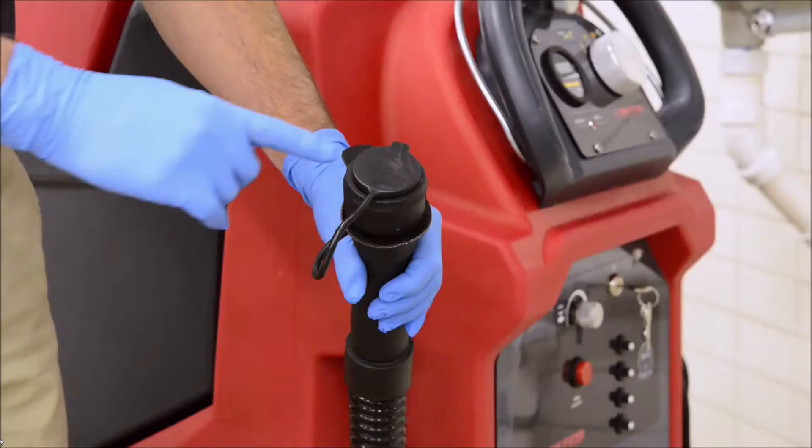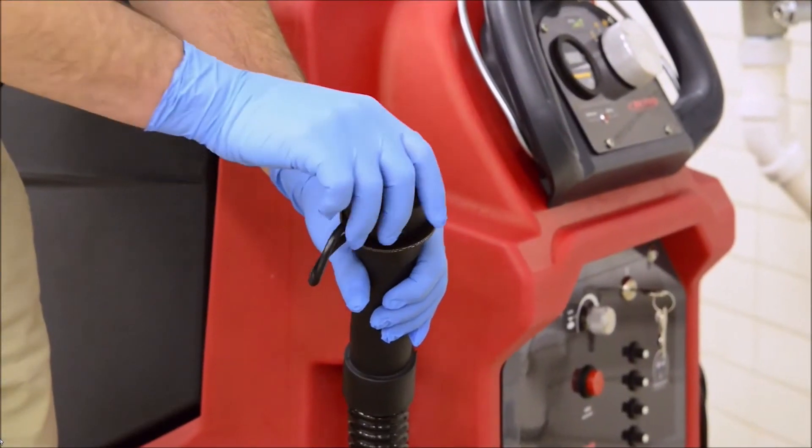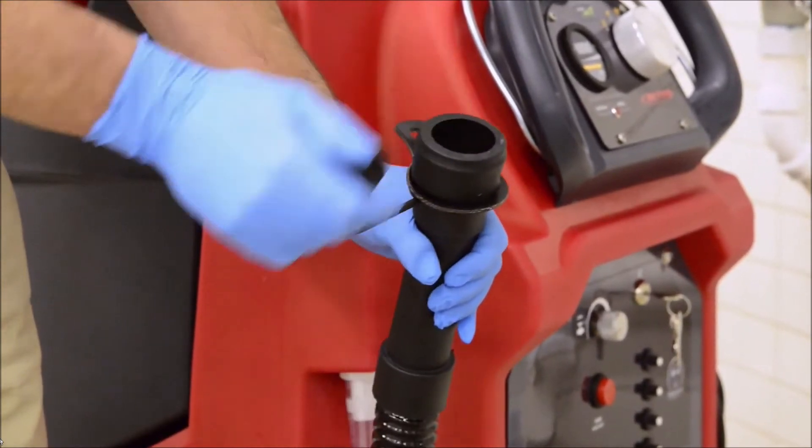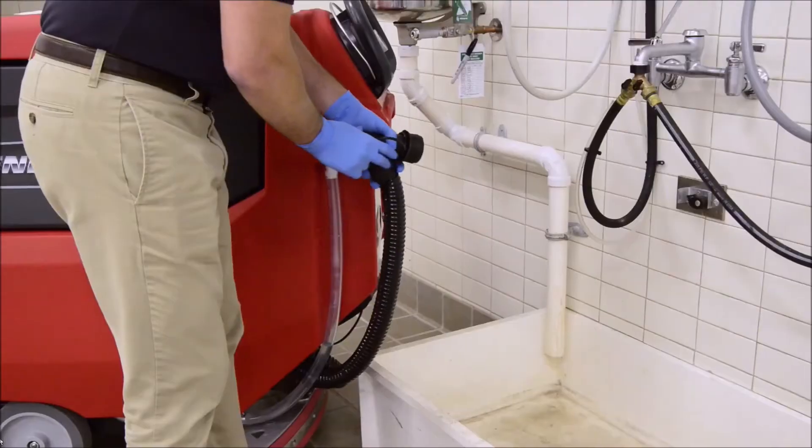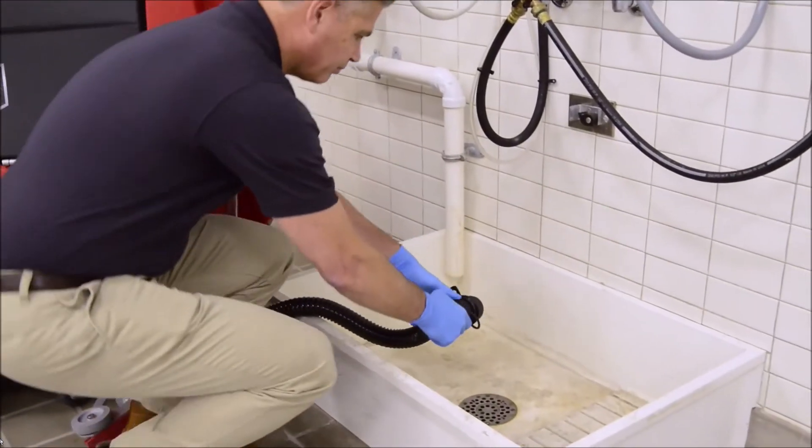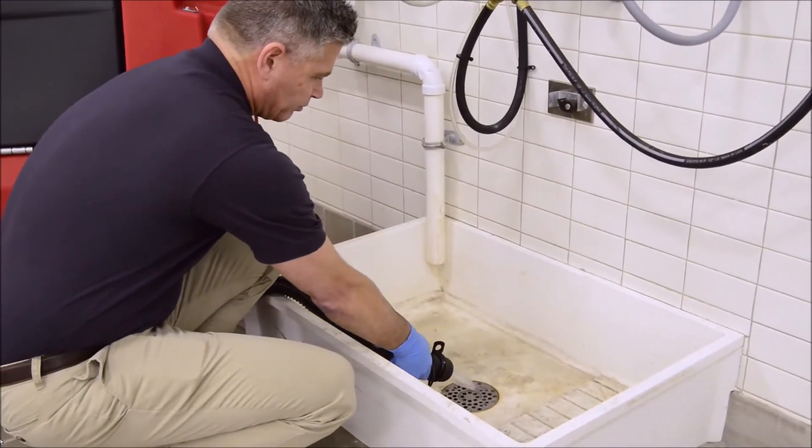Once in position, remove the cap of the recovery tank drain hose, being careful to do it above the water line so you don't get splashed. Then kink the hose and lower it into position over the drain. Slowly release the hose so the dirty water can flow down the drain.